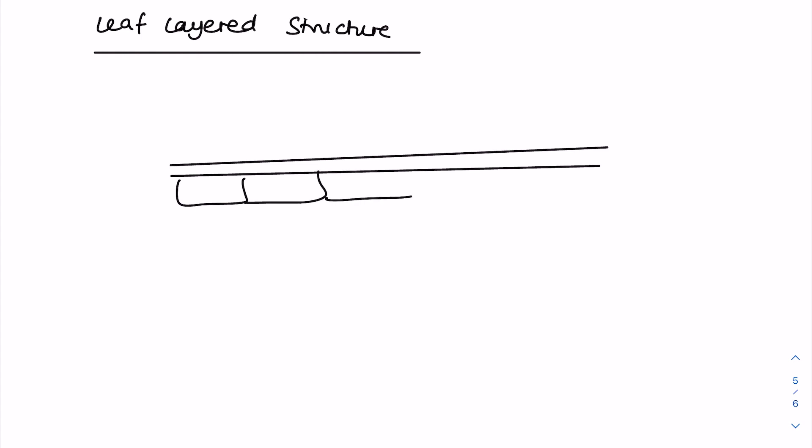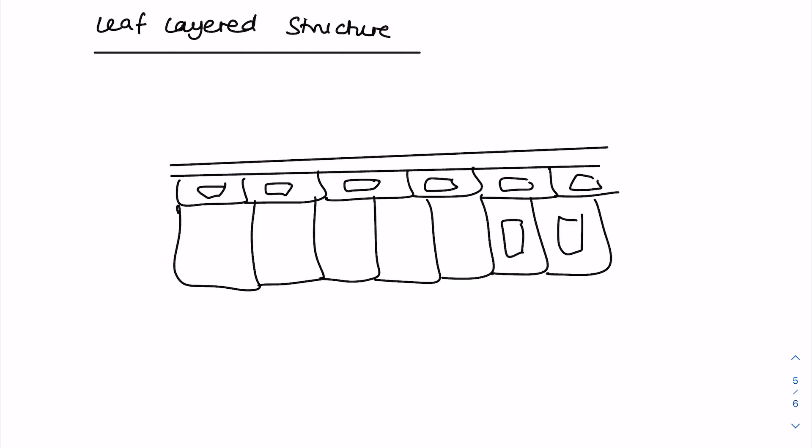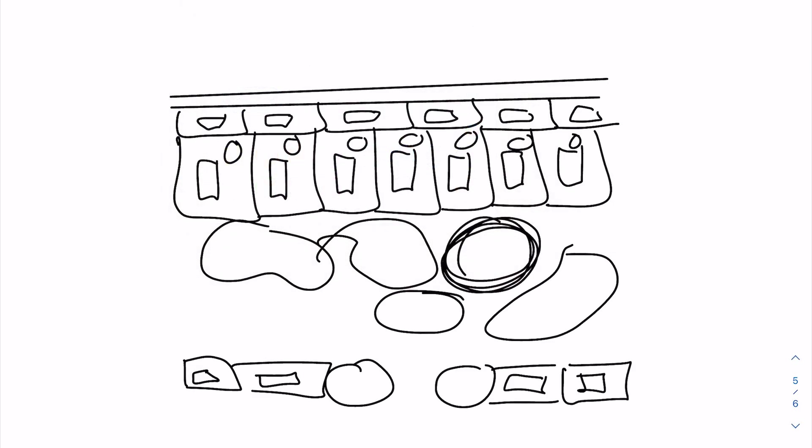Right, the leaf layered structure. So this is if we were to take a cross section of the leaf, you'd find this sort of arrangement. I think most important is that you can label this as opposed to draw it. But if I draw it out for you, you can see how we can build up knowledge of the leaf structure and how that's important in photosynthesis. Right, so we're ready to go. This top layer therefore is the waxy cuticle.